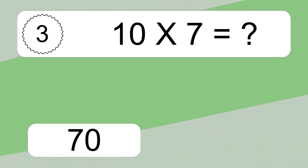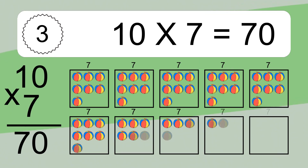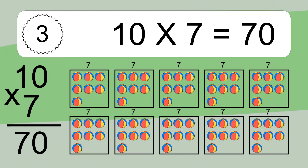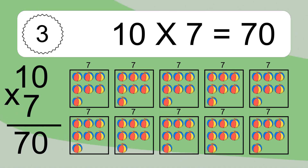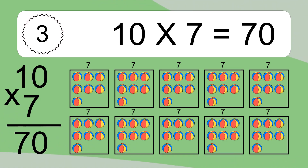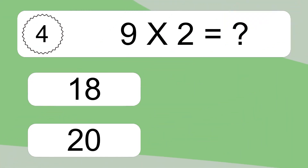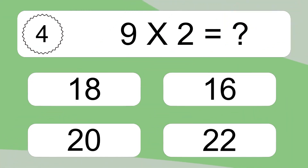10 times 7 equals what? 10 times 7 equals 70. We have 10 boxes, and each box has 7 colorful balls inside. If you count all the balls in all the boxes together, you will have 10 times 7 balls. This equals 70 balls.